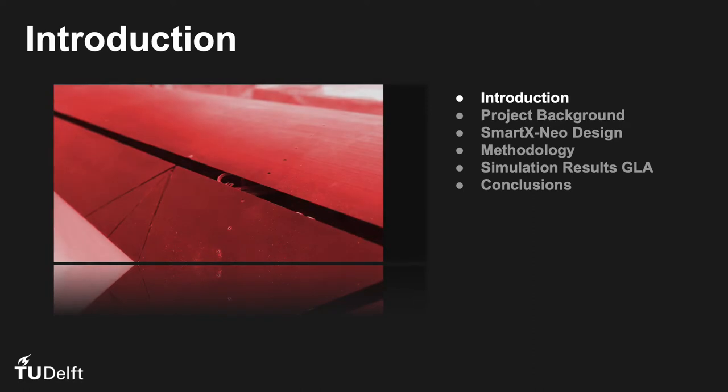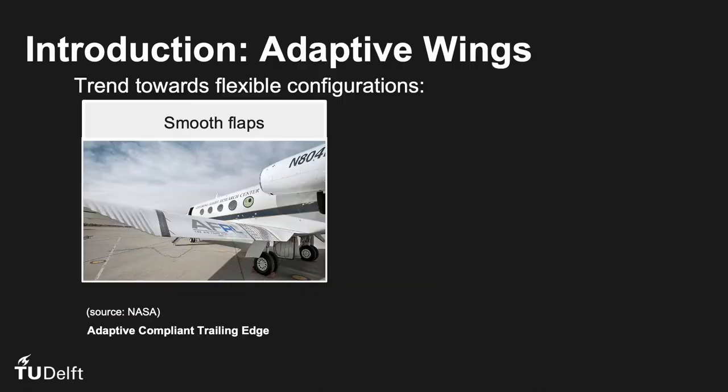First, let's have a look at the background topic of this presentation, adaptive aerospace structures. Adaptive aerospace structures are integrated systems that can adapt their shape most optimally in response to external flight conditions, load redistribution and maneuvers. This can help reduce the weight or fuel consumption during the operation.